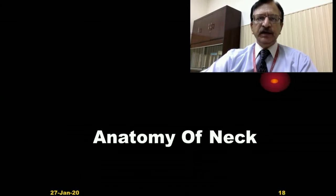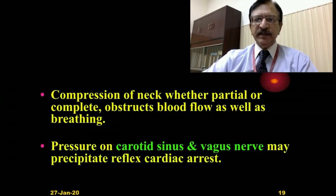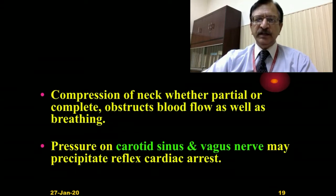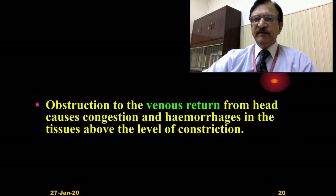Regarding the anatomy of the neck: compression of the neck, whether partial or complete, obstructs blood flow as well as breathing. Pressure on the carotid sinus and vagus nerve needs very slight pressure, as the carotid bodies are located in the carotid vessels and this precipitates reflex cardiac arrest. Obstruction to venous return from the head causes congestion and hemorrhage in the tissues above the level of the neck.